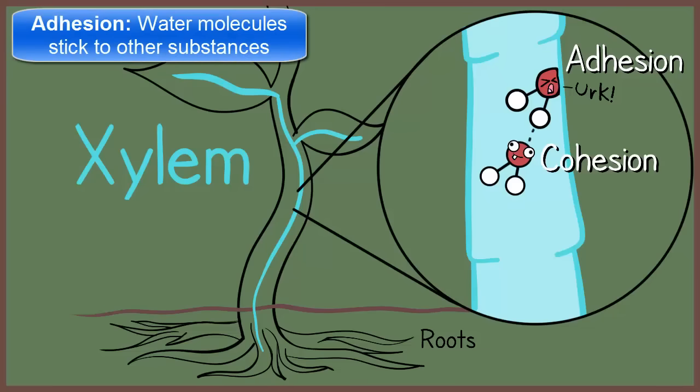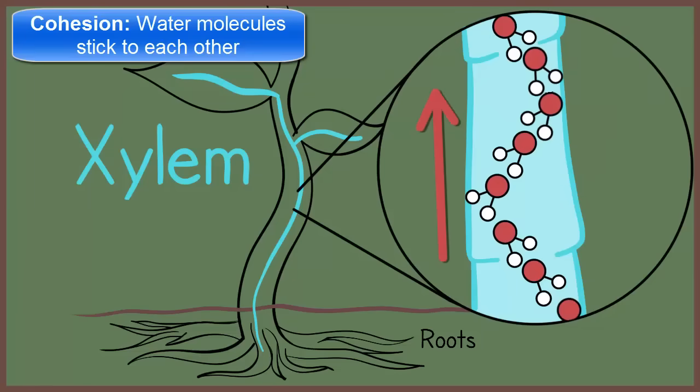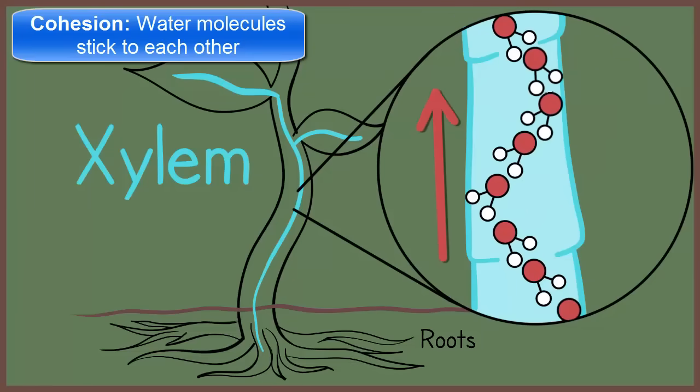But water molecules with their hydrogen bonding, they also bond to each other in something called cohesion. It's almost a beads on a string kind of fashion. Water molecules evaporate from a leaf, and then the next water molecule in line is pulled upwards, and so on.